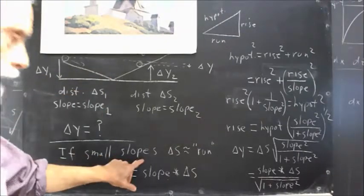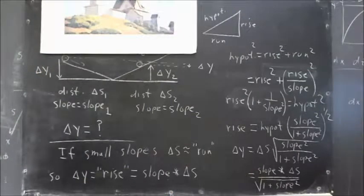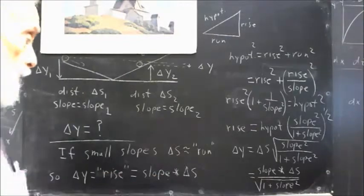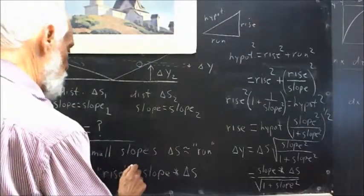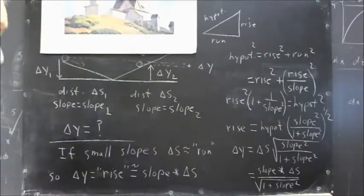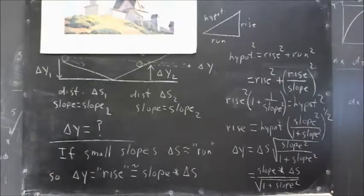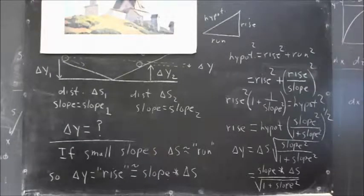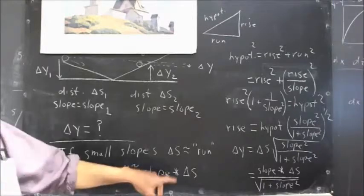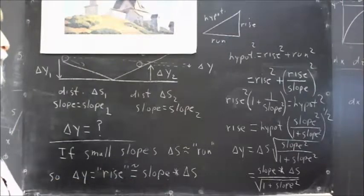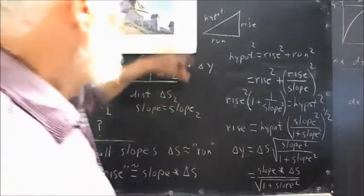And so, again, if slopes are small, delta S is approximately equal to the run, and delta Y, which is the rise, is then the slope times delta S. And we'll say that's approximately equal. And that's a very good approximation. For angles below 10 degrees or slopes below 0.1, actually 10 degrees would be a slope of about 0.16, 0.17. But for angles in that range and below, your approximation is good to within about 1%.